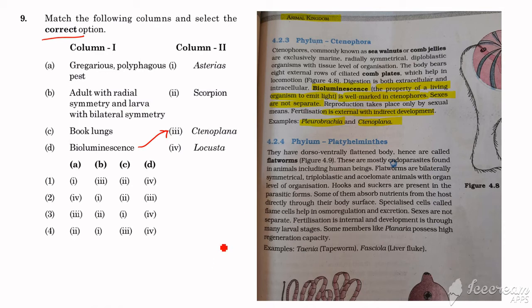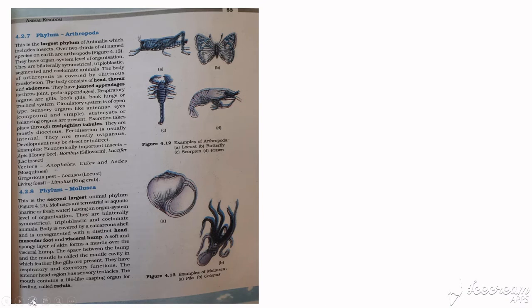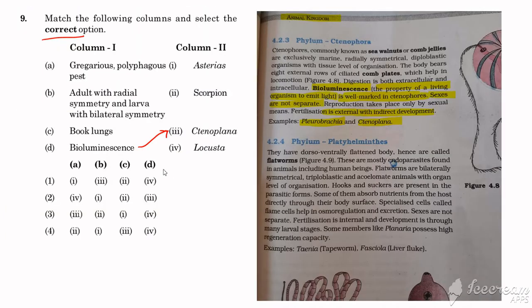Next items in the matching: Asterias, scorpion, and locus. For scorpion — belonging to phylum Arthropoda — the body is divided into head, thorax and abdomen with jointed appendages. Their respiratory organs include gills, book lungs, book gills, or the tracheal system. The option given here is book lungs, which matches scorpion. Arthropods have book lungs — they appear like pages of an open book, which is why they are called book lungs.